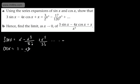Let's look at the McLaurin expansion for sin x. The McLaurin expansion for sin x is x minus x cubed over 3 factorial plus x to the 5th over 5 factorial and so on. Cos x is given to be 1 minus x squared over 2 factorial plus x to the 4th over 4 factorial and so on.